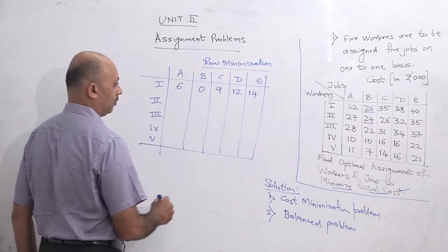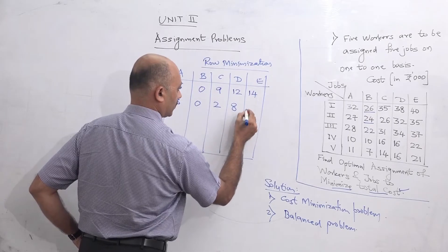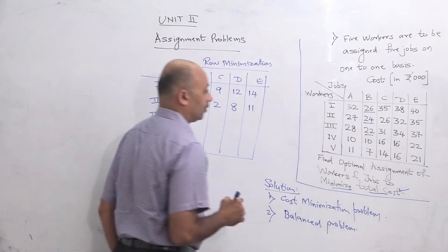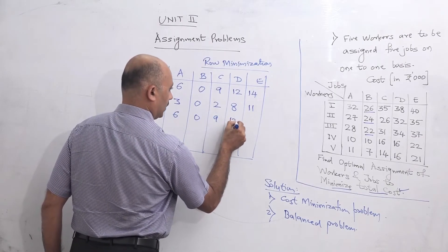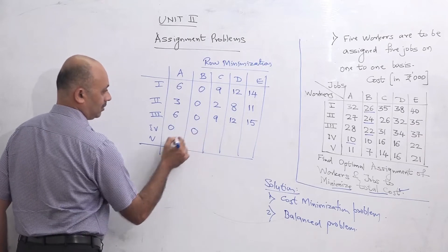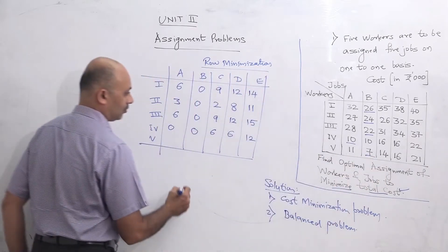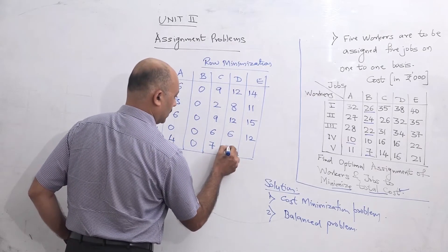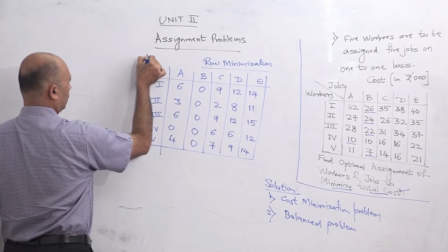Continuing row minimization: the results after subtracting row minimums give values like 6, 6, 6, 12 for one row. Fourth row minimum value is 10, so 10−10=0, 10−10=0, then 6, 6, 12. Row number 5 minimum value is 7, so we subtract 7 from all: giving 4, 0, 7, 9, and 14. This completes Table 1 — row minimization.